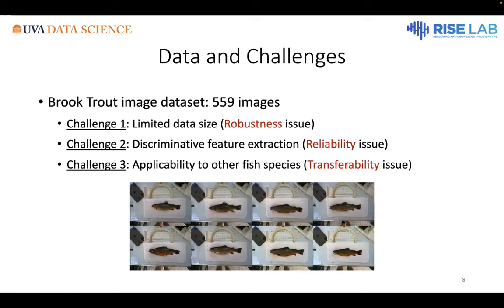The second challenge is how to get discriminative features from input images, because our goal is fish identification. It's desirable to have features that can distinguish individual fish so we can achieve better accuracy. The third challenge is how to apply the models to other fish species — we want a general solution that can help other fish species or even other animals, so we need our solution to be transferable to other domains as well.